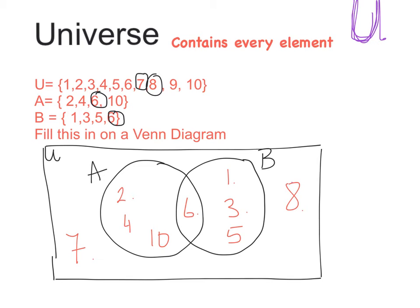As long as it's outside the circles and within the box, it can go anywhere. Again, I come across the same situation with 9. 9 isn't in A or B, so I'm going to place 9 here. And 10, I have in A. So I have filled out this information.